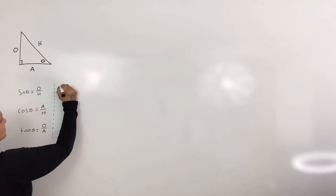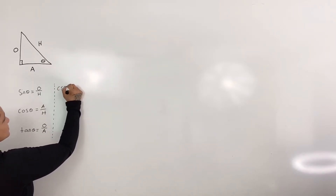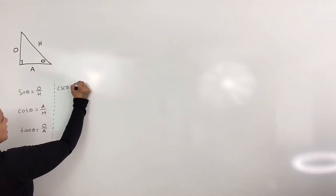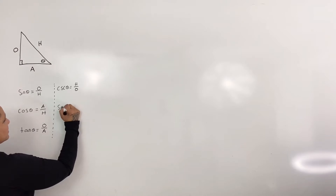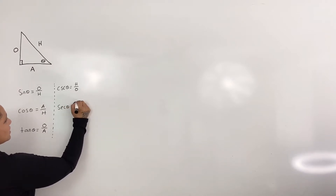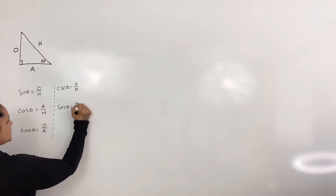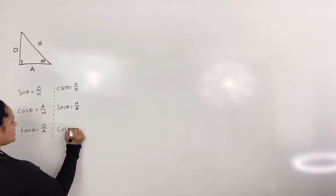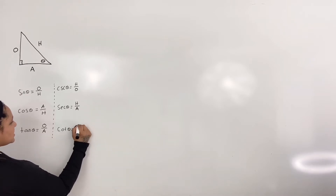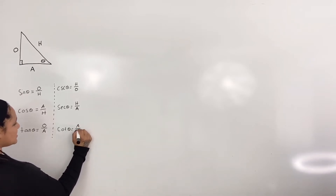Cosecant of theta is equal to hypotenuse over opposite, secant of theta is equal to hypotenuse over adjacent, and cotangent of theta is equal to adjacent over opposite.